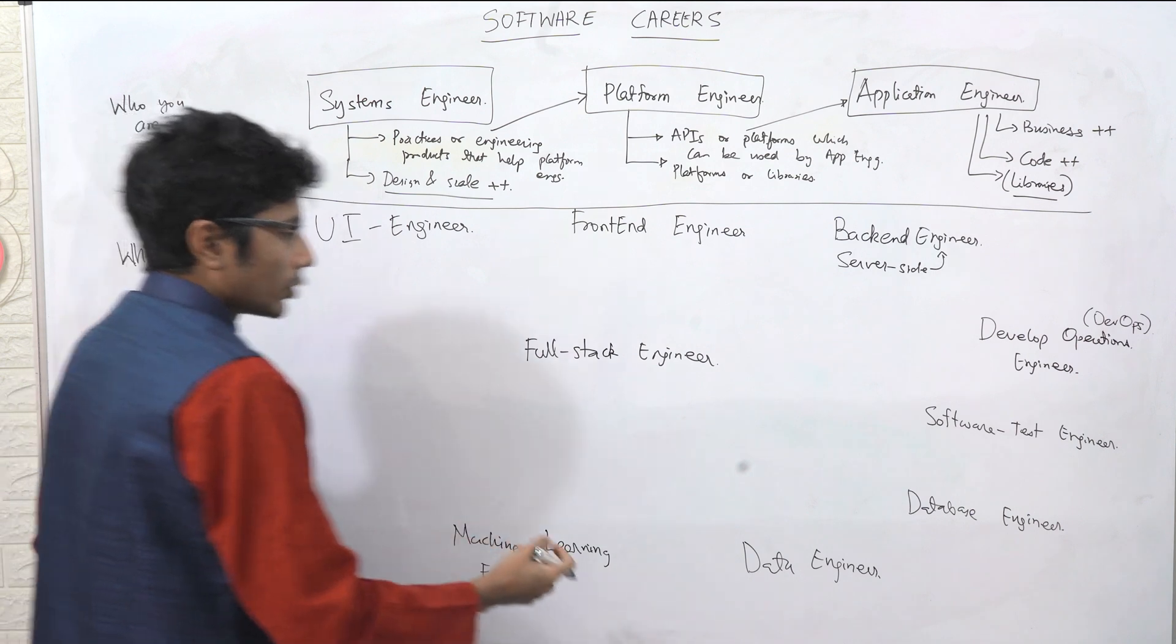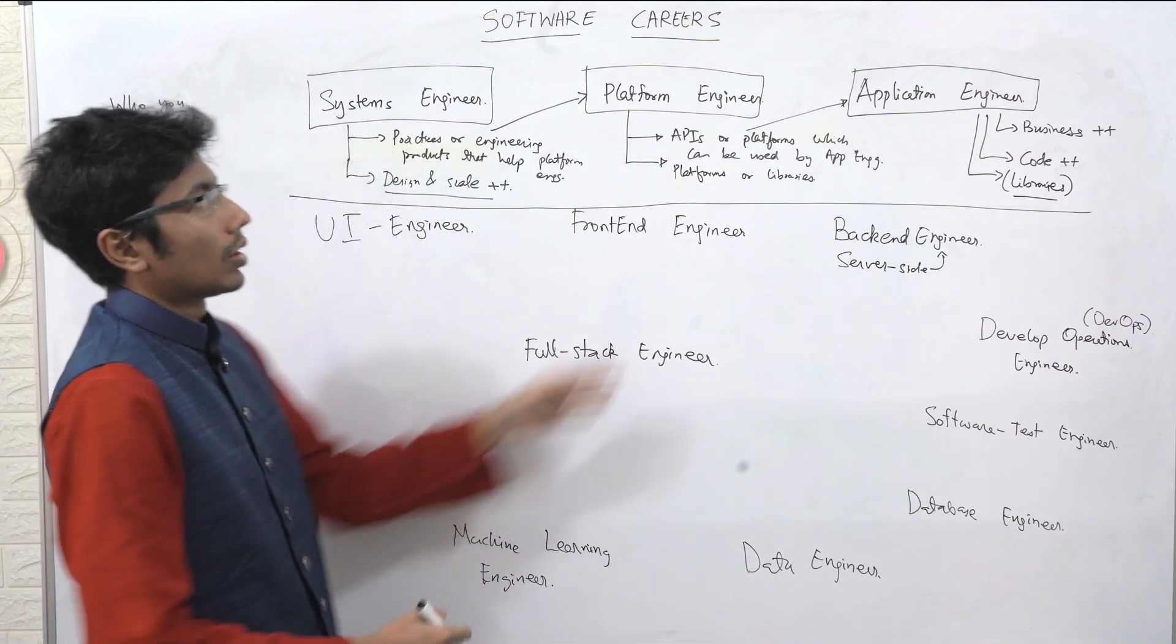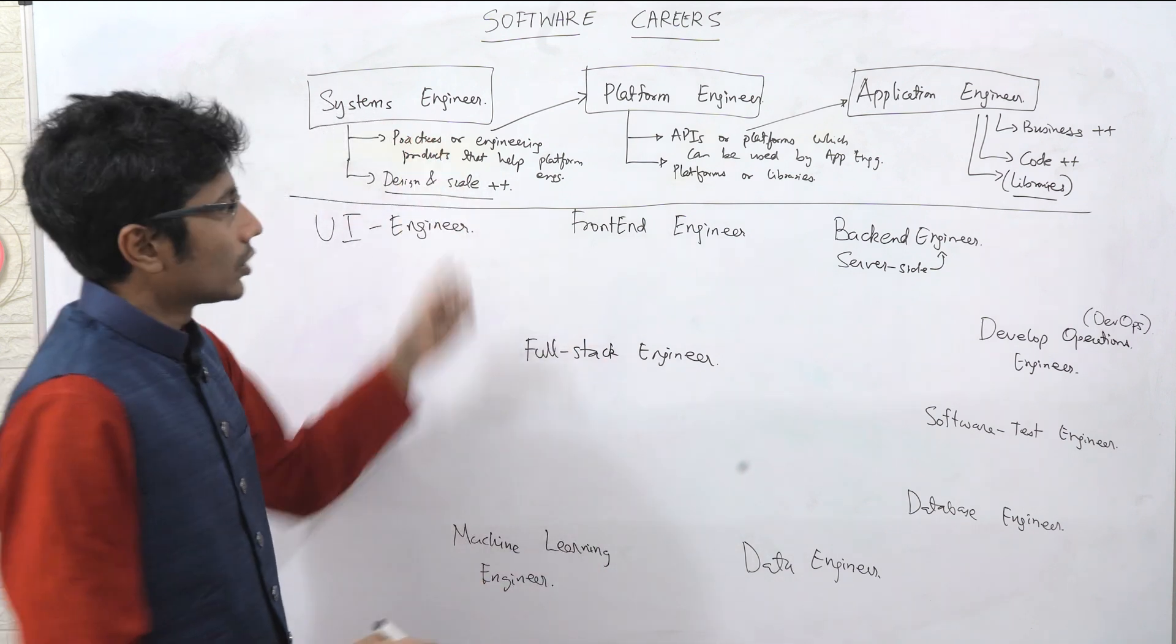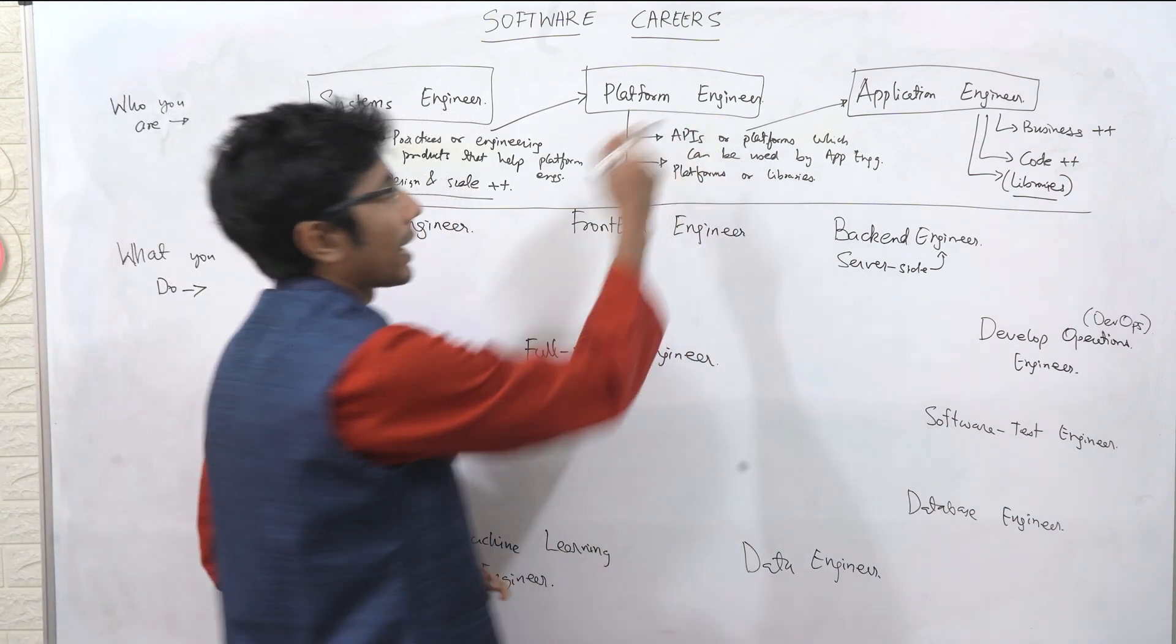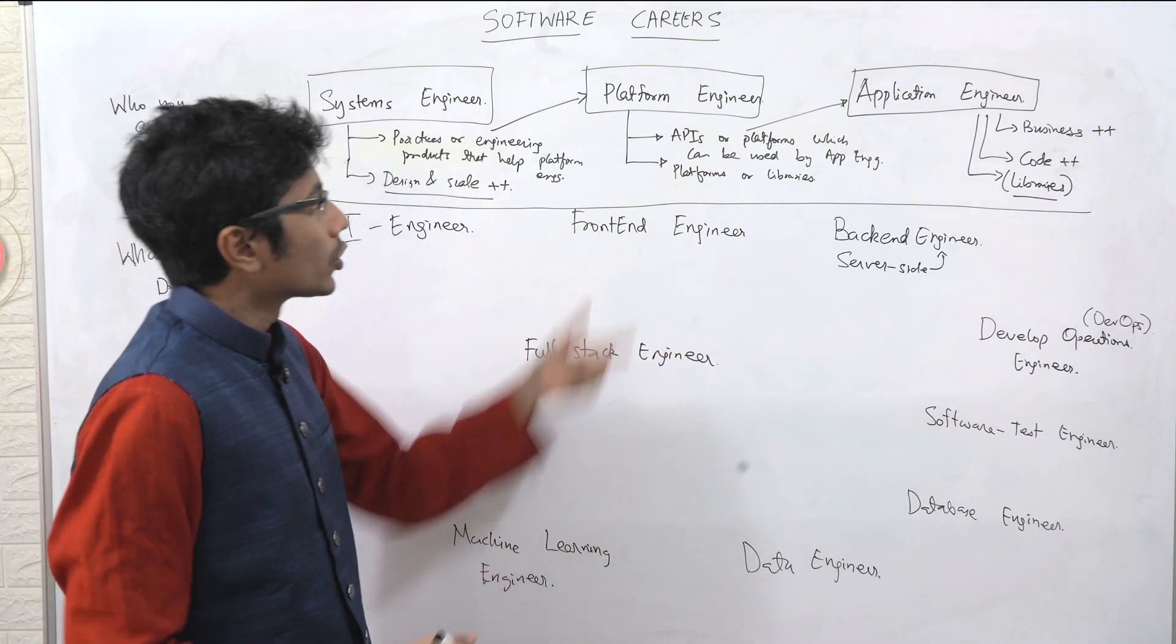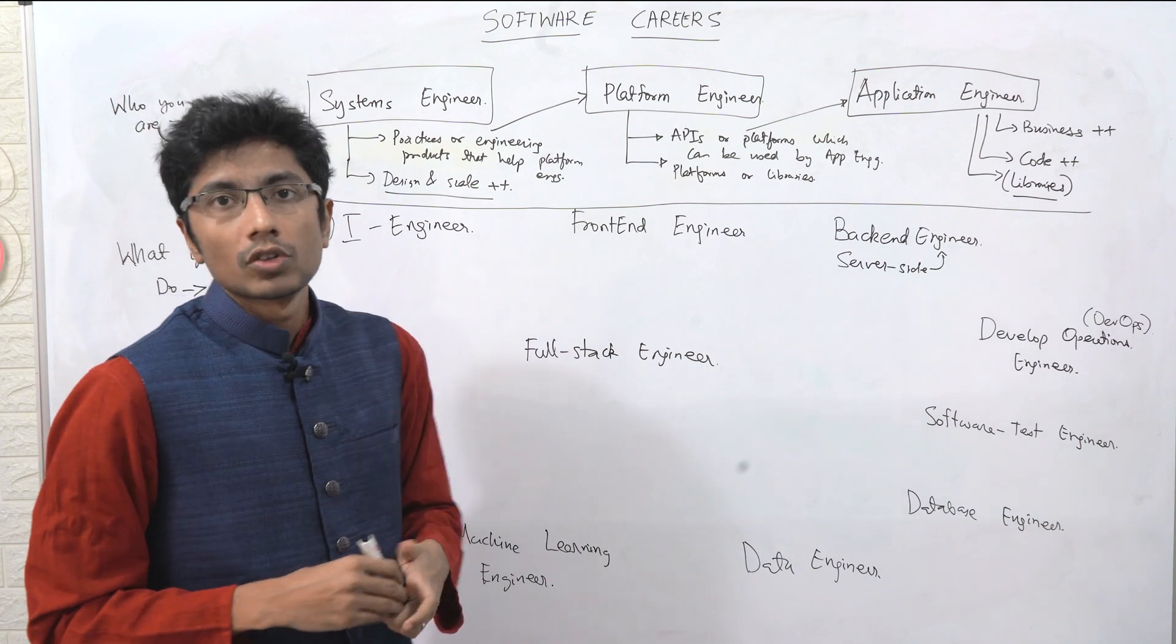Now let's get to what you do. For example, you can be a machine learning engineer on the application side, you can be a data engineer on the system side, you can be a software test engineer on the platform side, so you write platforms as a software test engineer that other testers use to test your software.